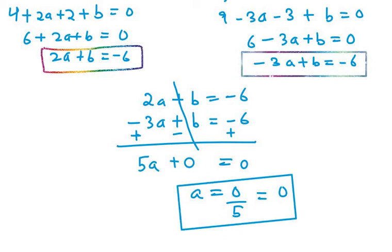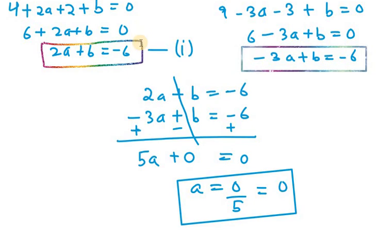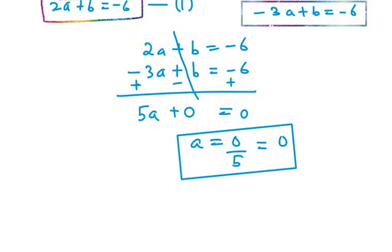Now we need to find the value of b. So I will be taking equation number 1 and will be putting the value of a into it. So it will be 2a, a will replace 0, 0 + b = -6. So it will be b = -6.